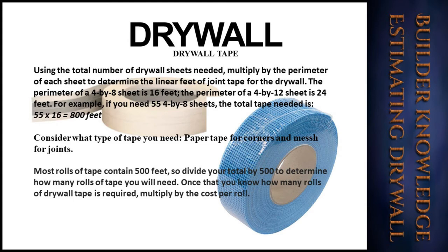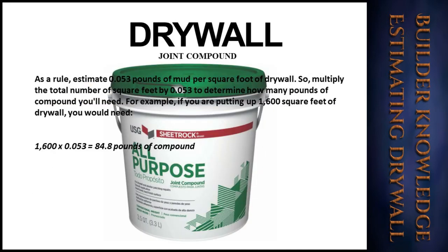For example, if you need 55 4×8 sheets, the total tape needed is 55 times 16, which equals 880 feet. Take into account what type of tape you need — paper tape for corners and mesh for joints — depending on your specifications. Most rolls of tape contain 500 feet, so divide your total by 500 to determine how many rolls you will need. Once you know the number of rolls, multiply by the cost per roll.